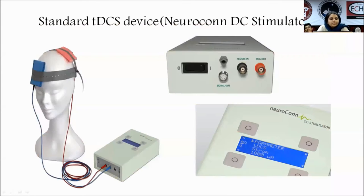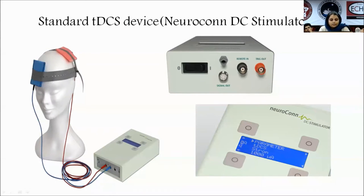This is the standard tDCS device, where there is an anode which is red in color, a cathode which is blue in color, and the leads for electrodes as well as a battery device.